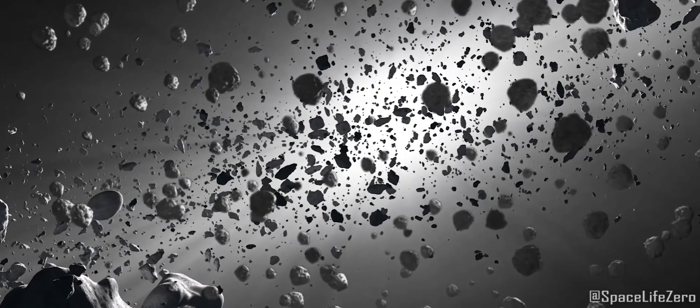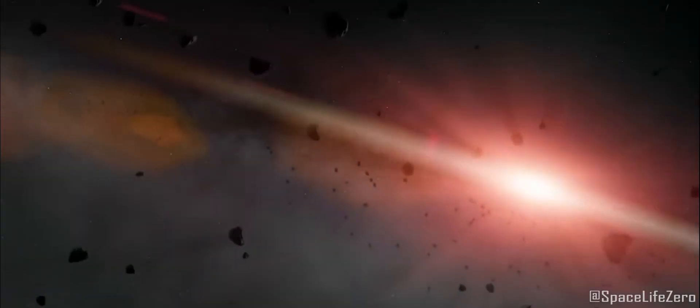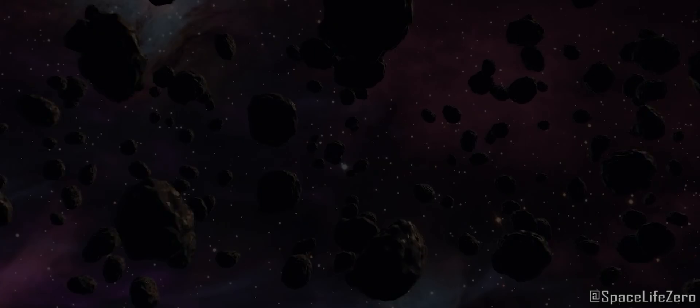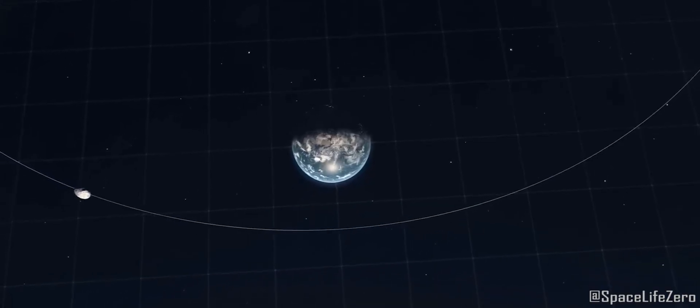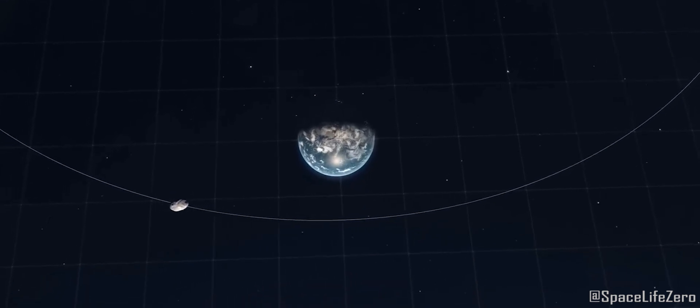Asteroids are remnants of the early solar system, often dubbed as cosmic leftovers. They range in size from small pebbles to colossal giants, and their orbits can sometimes bring them uncomfortably close to our beloved planet.